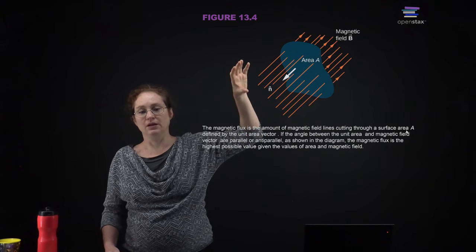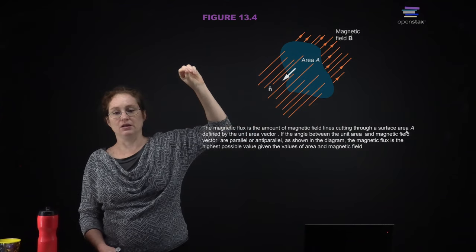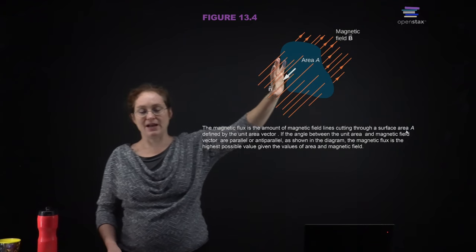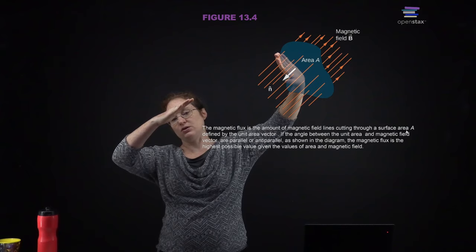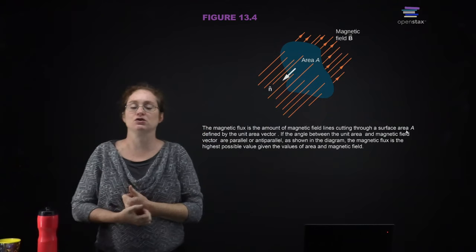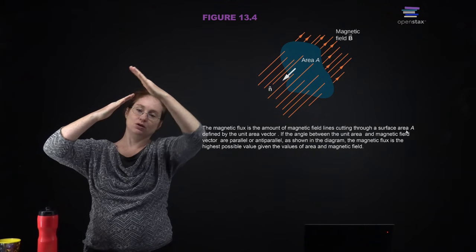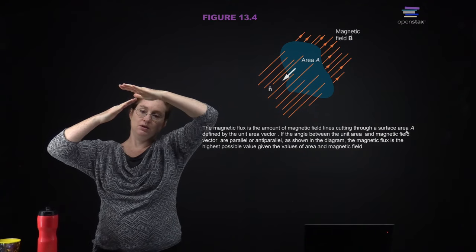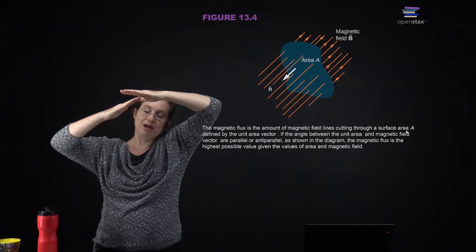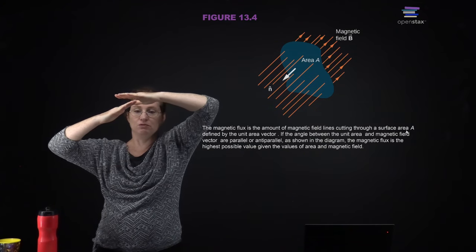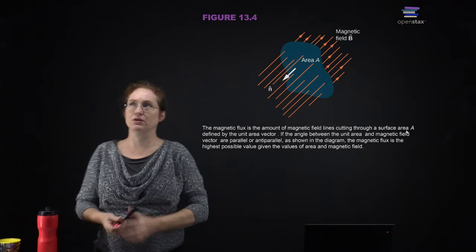If the normal to the area is perpendicular to the magnetic field, you have the largest flux through the area. Whereas if you change the angle of the area with respect to the magnetic field, you are reducing the magnetic flux. So we can do a quick simple example.